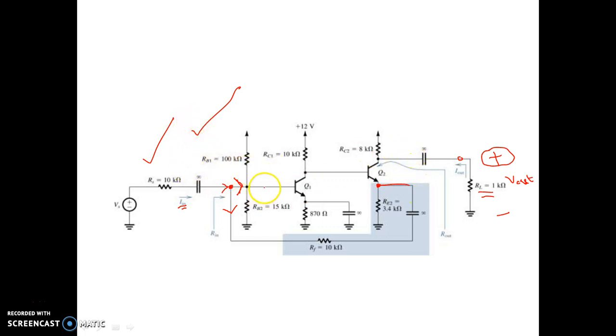So this is current sampling and shunt mixing. So we can say this is current shunt feedback topology. Clear? This is all for this video. In my next video I will show you some more examples. Thank you for watching.